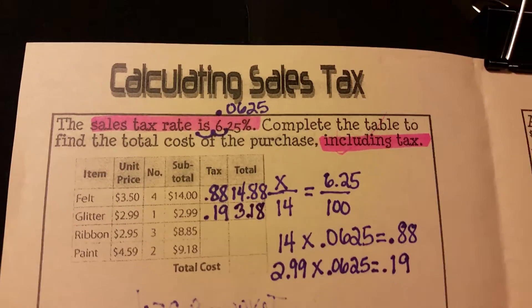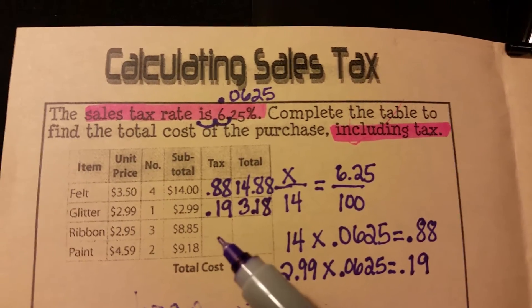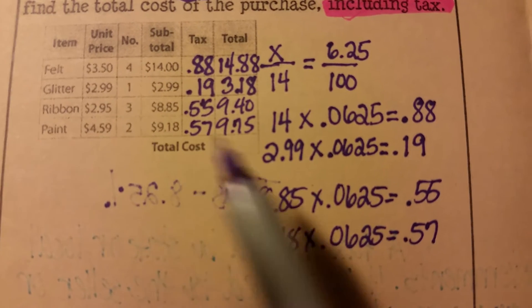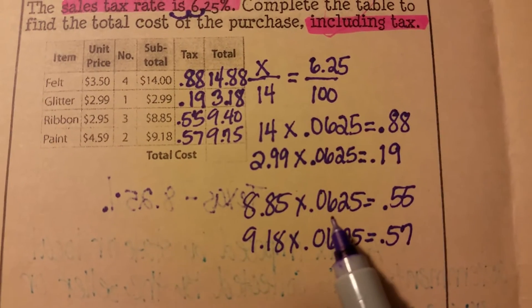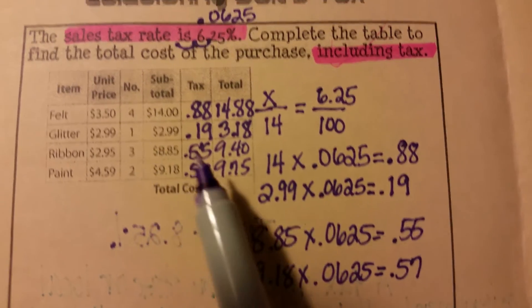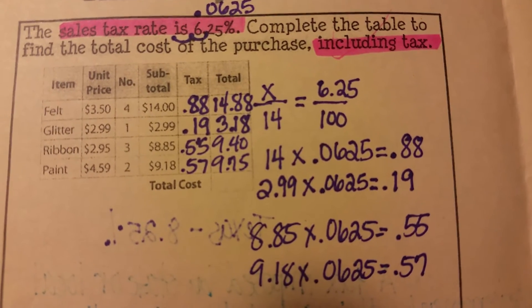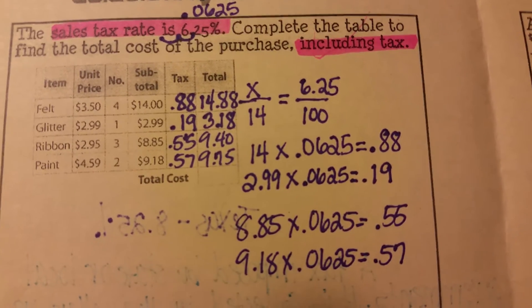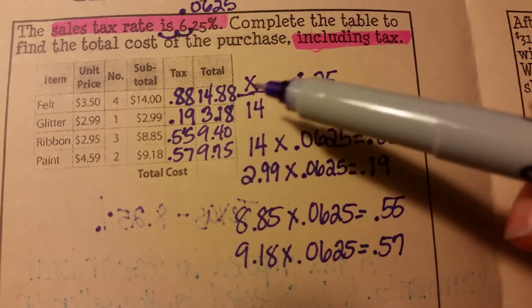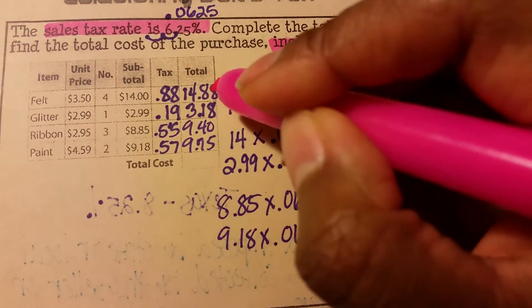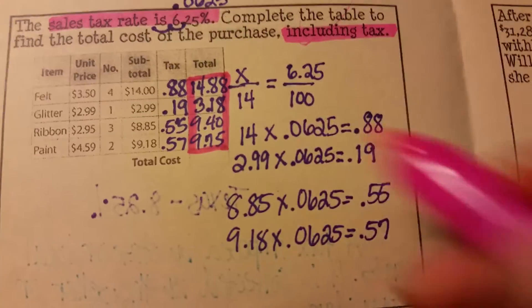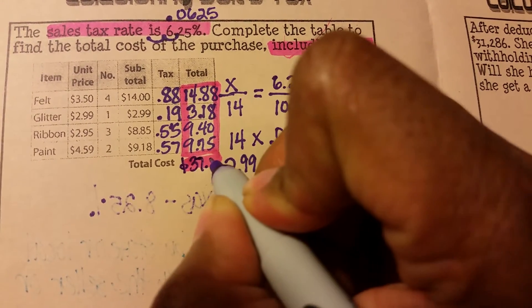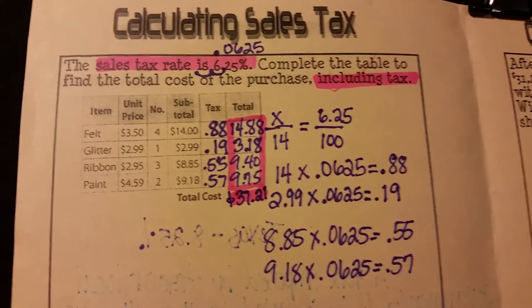I'm going to pause and give you a few minutes to talk with your partner and find the tax amount for ribbon and paint and get a total. For ribbon, $8.85 times 0.0625 gives 55 cents in tax, so the total is $9.40. For paint, $9.18 times 0.0625 gives 57 cents, so the total is $9.75. Adding the whole column gives a total cost of $37.21.